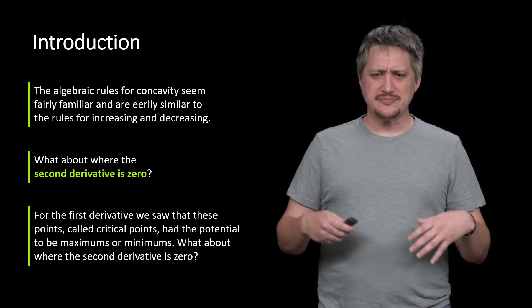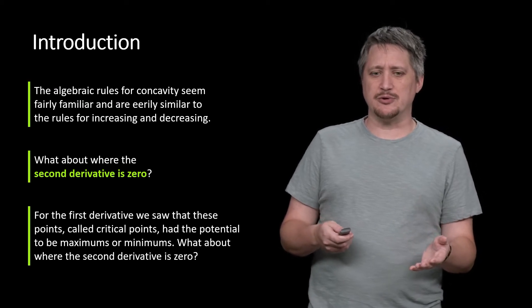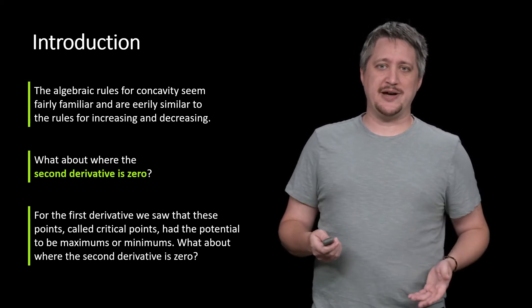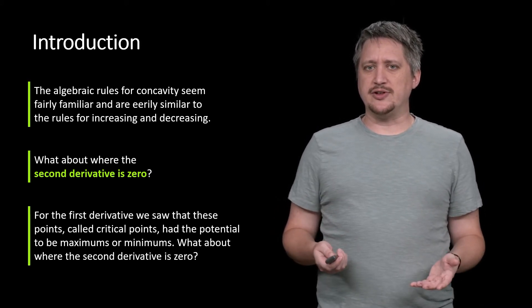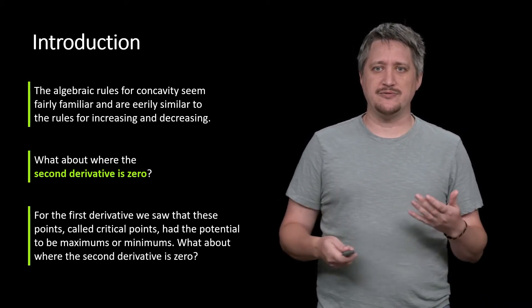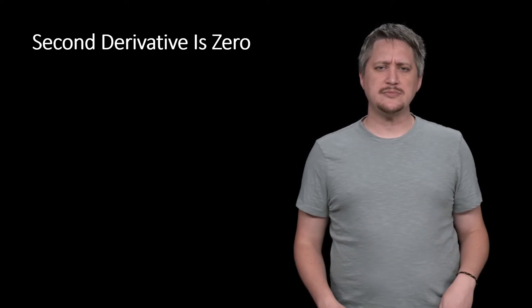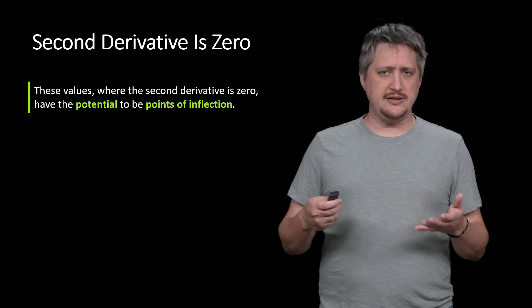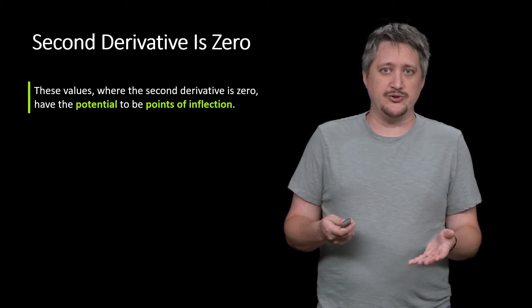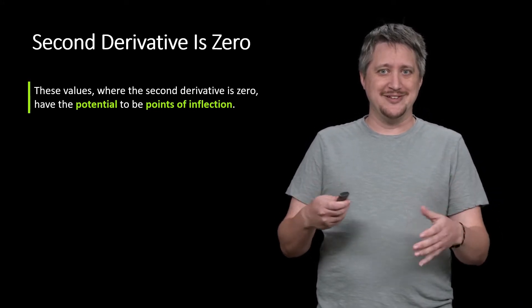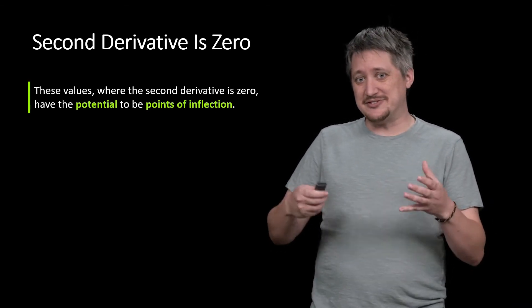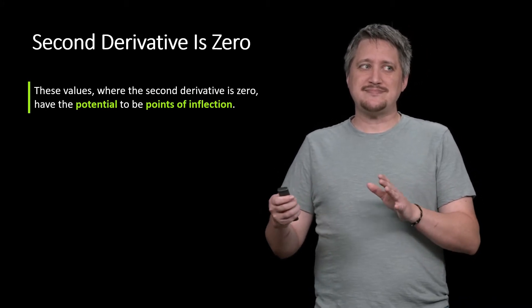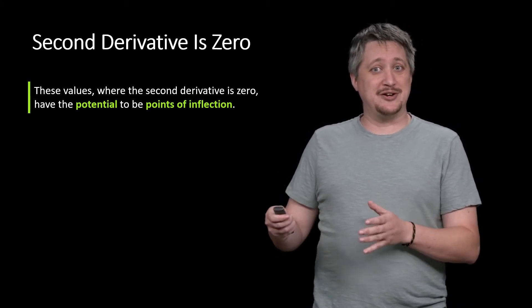What is this? So for the first derivative, we saw that these were called critical points. They had the potential to be these maximums and minimums. So what about the second derivative? And when that's zero, do we have any sort of parallel there? So these values where the second derivative is zero, they have indeed the potential to be something.